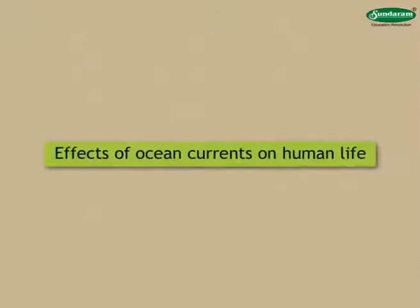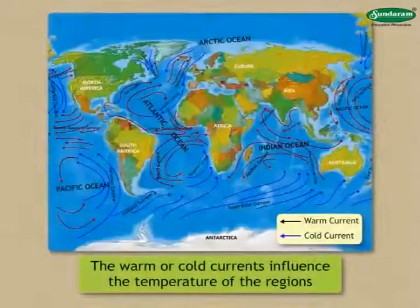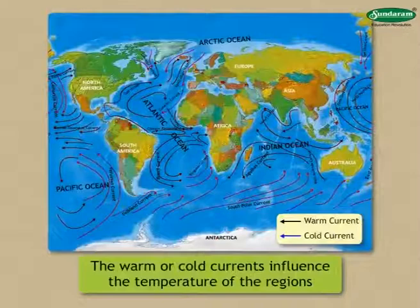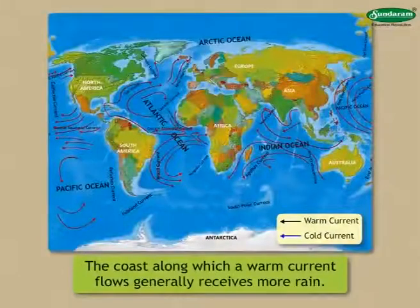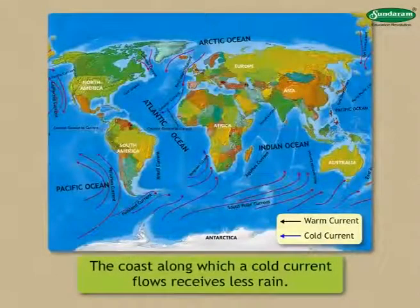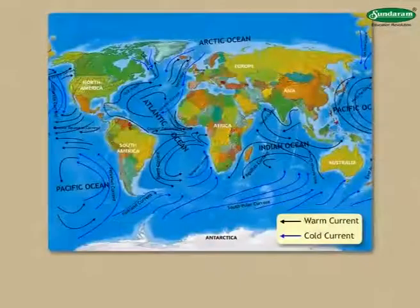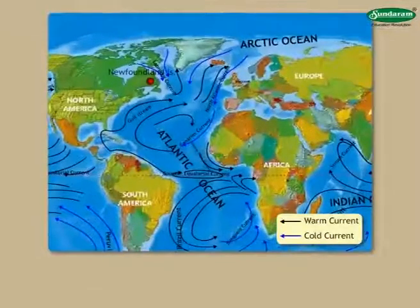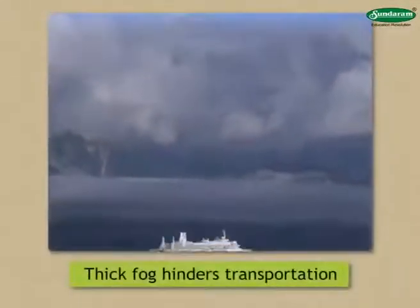Let us study more about the effects of ocean currents on human life. The warm or cold currents influence the temperature of the regions along which they flow. Rainfall in coastal areas is also affected by ocean currents. The coast along which a warm current flows generally receives more rain, while the coast along which a cold current flows receives less rain. Thick fog develops in regions where warm and cold currents converge, such as near Newfoundland Island where the warm Gulf Stream and the cold Labrador Current meet. Such thick fog hinders transportation.